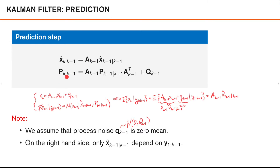The predicted covariance can be derived in a similar manner, giving us this expression: the posterior covariance translated by the transition matrix A_{k-1}, plus the covariance of the process noise Q_{k-1}. We should note some important things. First, for these equations to hold true, we need to assume that the process noise is zero mean. Second, as we'll see in the update step, only the posterior mean is dependent on the observations from 1 to k-1. One consequence is that our uncertainty in the state, as described by the covariance matrix P_{k|k-1}, is not dependent on data and can thus be pre-computed and will eventually become constant over time.